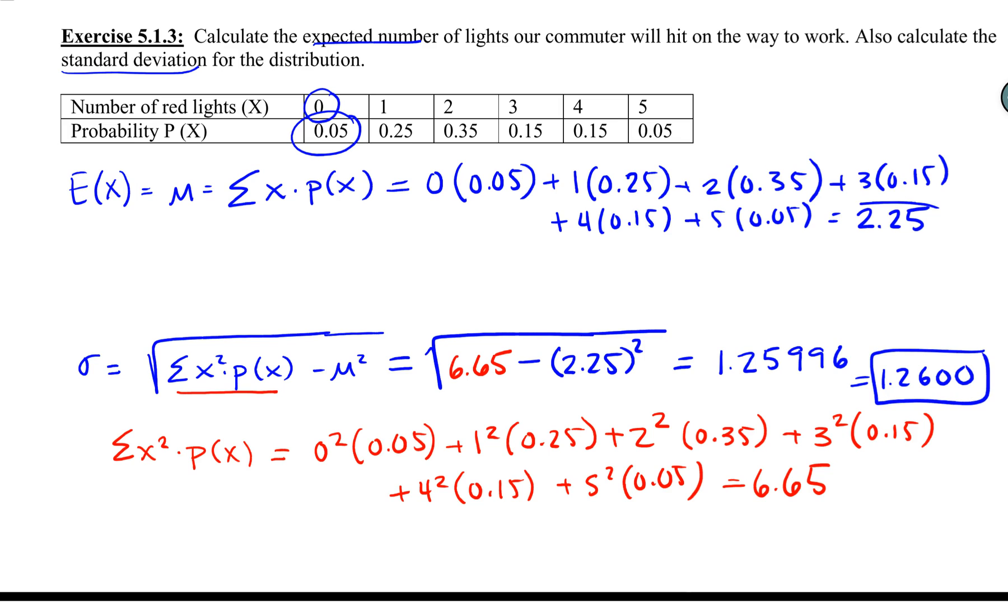No need for units in this particular case because these are both a count. The expected number of red lights is 2.25, and the standard deviation is 1.26 lights. This also points out that we don't want to round these.